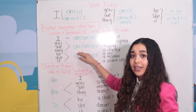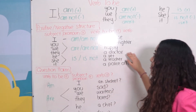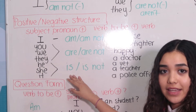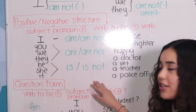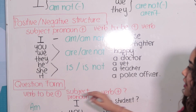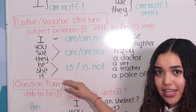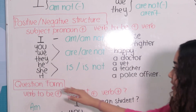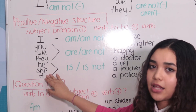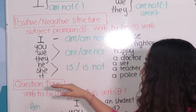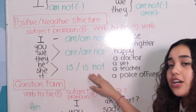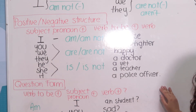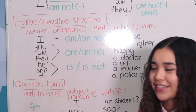They are in positive, or are not in negative — a doctor. And she is in positive, is not in negative — a teacher. And it — remember, we use it for animals, places, or things. 'Is' in positive, 'is not' in negative — a police officer. We know that an animal can be a police officer, but it's just an example.